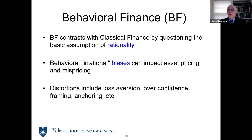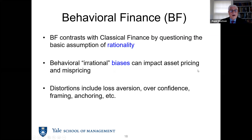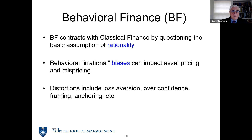In behavioral finance, in contrast to classical finance, we can question the basic assumption of rationality. We allow for irrational behavior, and once you allow for irrational behavior, biases can come in and impact asset pricing. You get distortions like loss aversion, overconfidence, framing, anchoring, and so forth. And I already showed you that if some of the people have these distortions, they don't necessarily get arbitraged away because they're aggregated across all the demand curves.